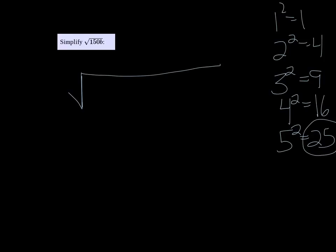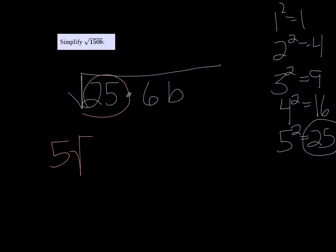25 goes into 150, and it goes in 6 times. So if I rewrite 150 as 25 times 6 times b, I can take out that 25 because it's a perfect square. So I get 5 square root of 6b, and the 6 and the b cannot be simplified any further, so that's the answer.